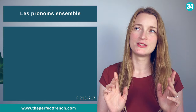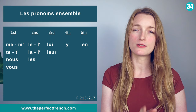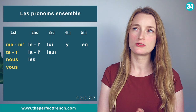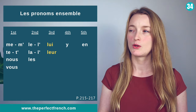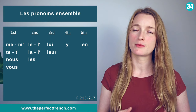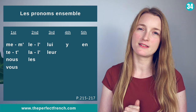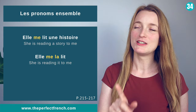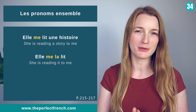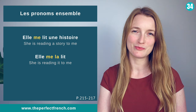How to use pronouns together — five columns: me/m', te/t', nous, vous (people) → le/l', la/l', les → lui, leur → y → en. Remember: selfish word me first, object second, other people third, then y and en — the donkey. Elle me lit une histoire → une histoire is replaced → elle me la lit.